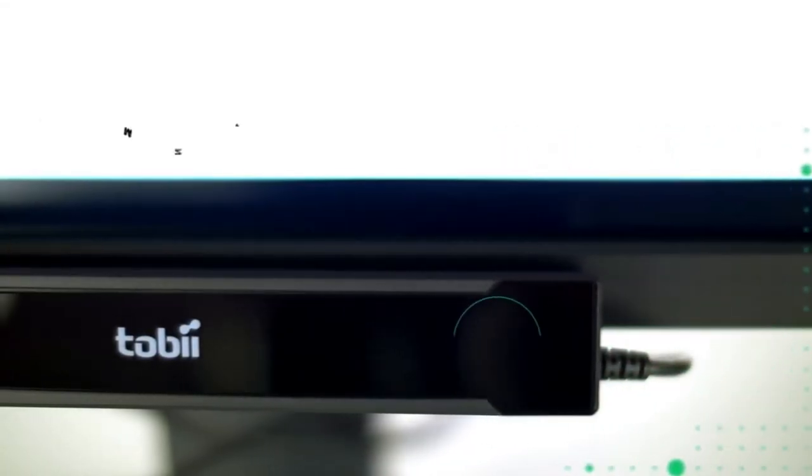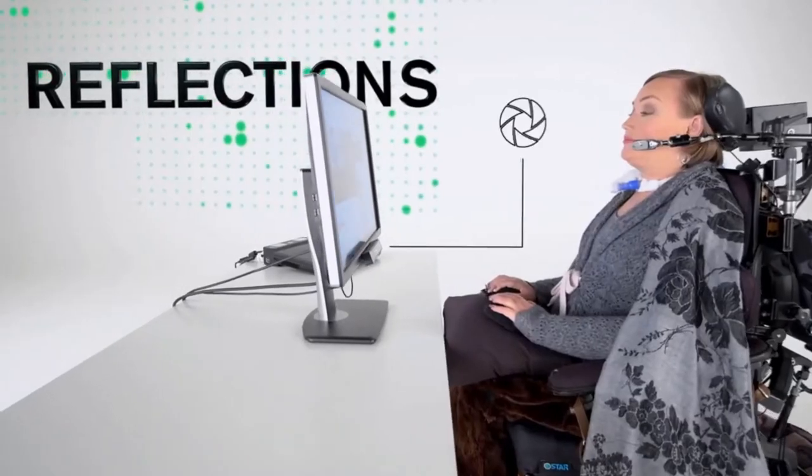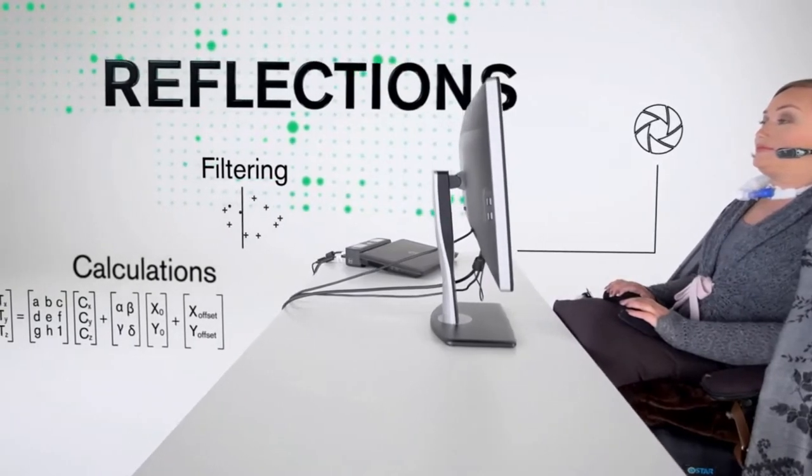Illuminators in the eye tracker send out near-infrared light that is reflected by your eyes. A camera registers these reflections and through filtering and advanced calculations, we can determine where on the screen you are looking and then place the computer cursor consistently and accurately.